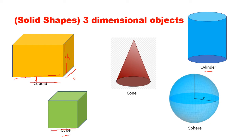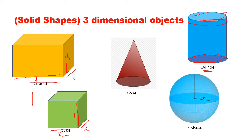Even a cube has got length, breadth and height, but all of them are equal — the length, the breadth and the height are all L. Both the cuboid and cube are made up of straight edges. Now when we move to the cylinder, we will see that there are no straight edges. The top part is in the shape of a circle, the bottom is also in the shape of a circle, and there is a part curving around the cylinder. The cylinder has a curved part while the cuboid and cube had only straight edges.